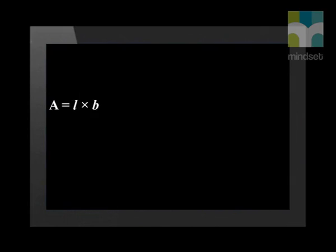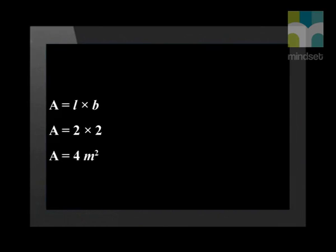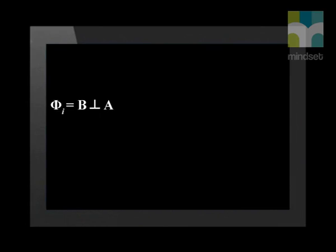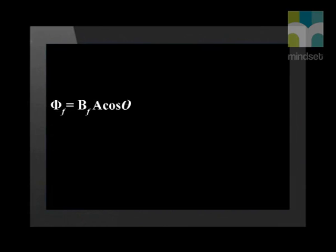The area of a square is determined with the formula length times breadth. Substituting 2 meters times 2 meters gives an area of 4 square meters. Let's calculate the flux through the square before it's rotated. Because it's perpendicular to the magnetic field, the flux is simply the product of the area of the square and the magnetic field strength. Substituting the values gives us an initial magnetic flux of 40 Weber. Next, let's calculate the flux through the square after it's rotated. Now we have to take into account the fact that the square is at an angle of 60 degrees. Substituting the values and calculating gives us a final magnetic flux of 20 Weber.